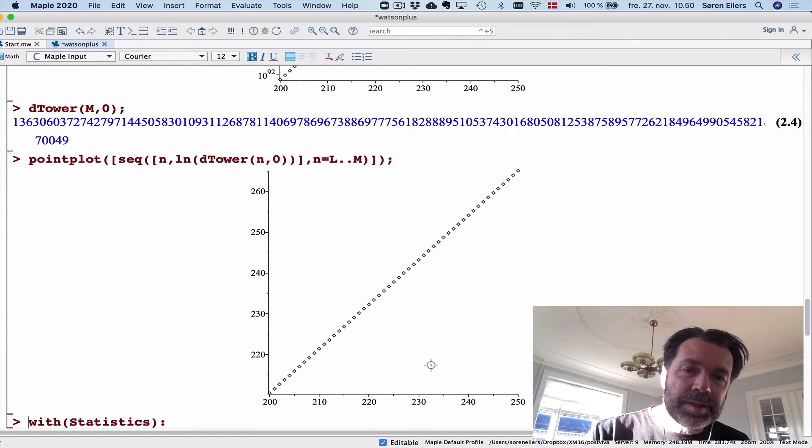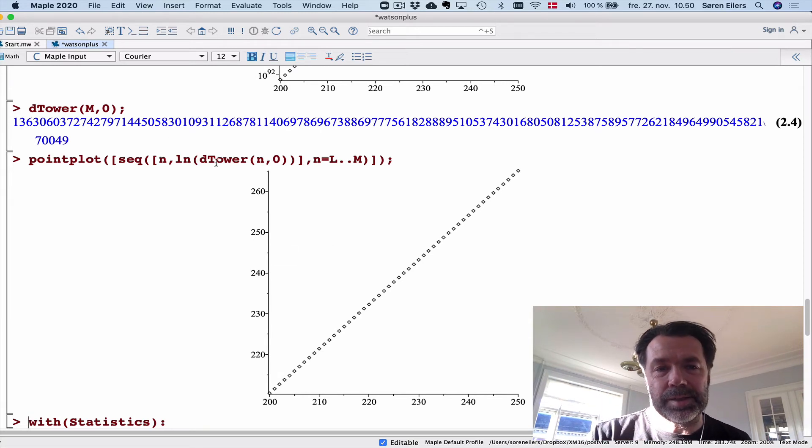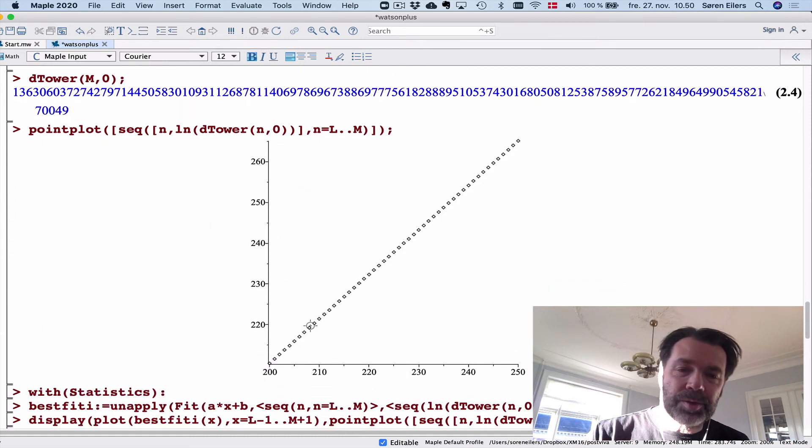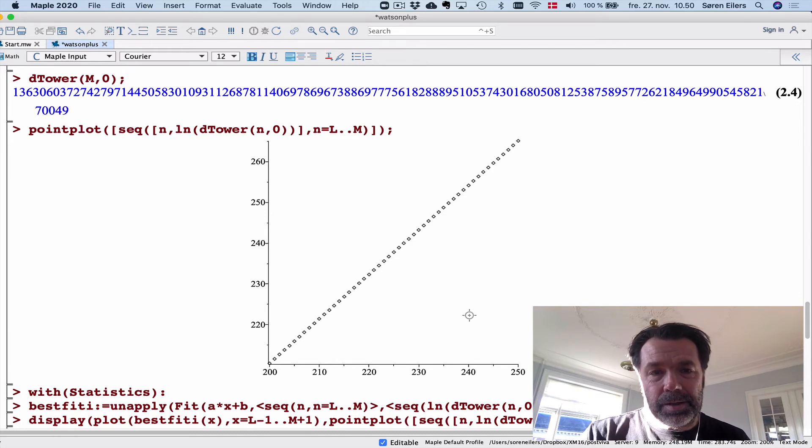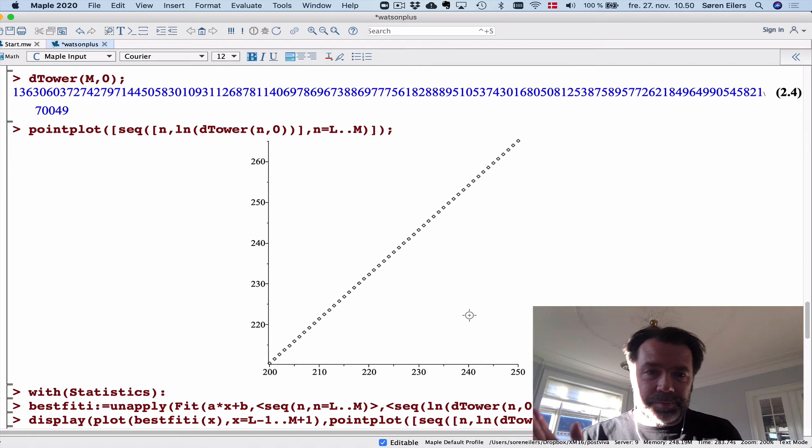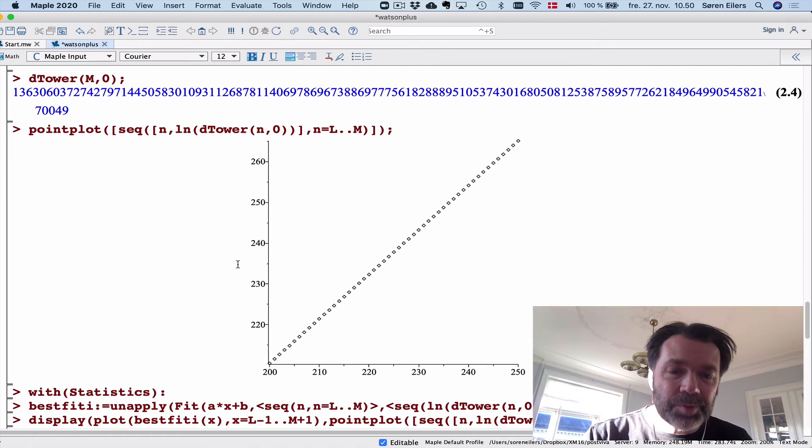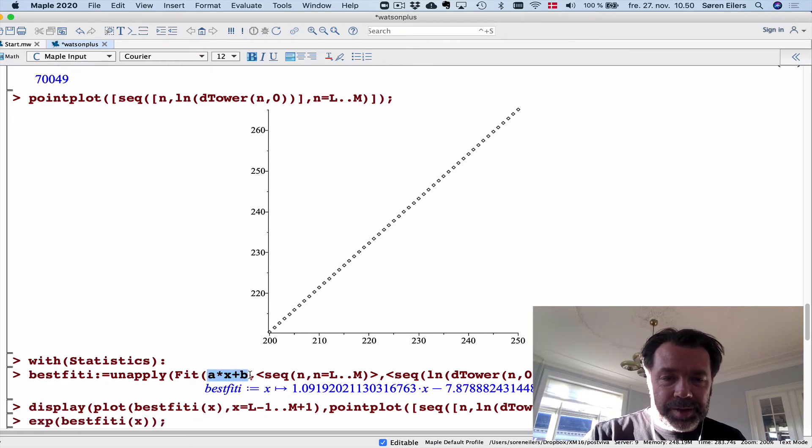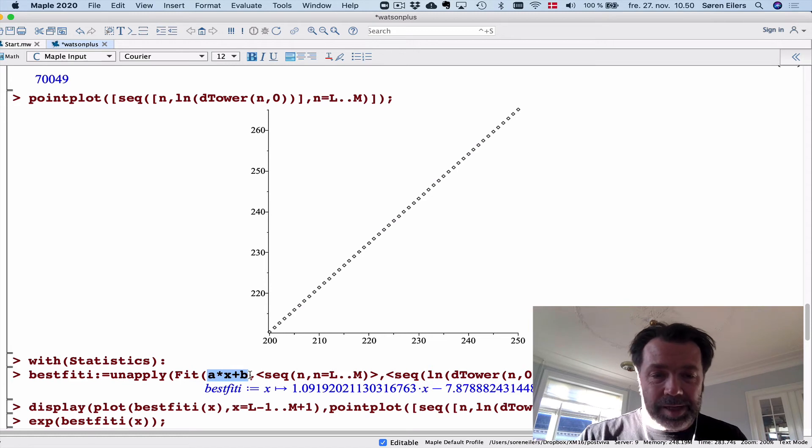First of all, I'm going to make an explicit conversion to the logarithm. I'm plotting here not n and d tower n, but n and the logarithm of d tower. I'm getting the same graph as I did up here, but now it's set up so that it comes in the correct standard xy coordinate system. Then I do a fit, and let's return later to how this is done, but essentially I'm asking Maple to find the best expression of the form ax plus b—the best line—which then gets as close as possible to the observations.